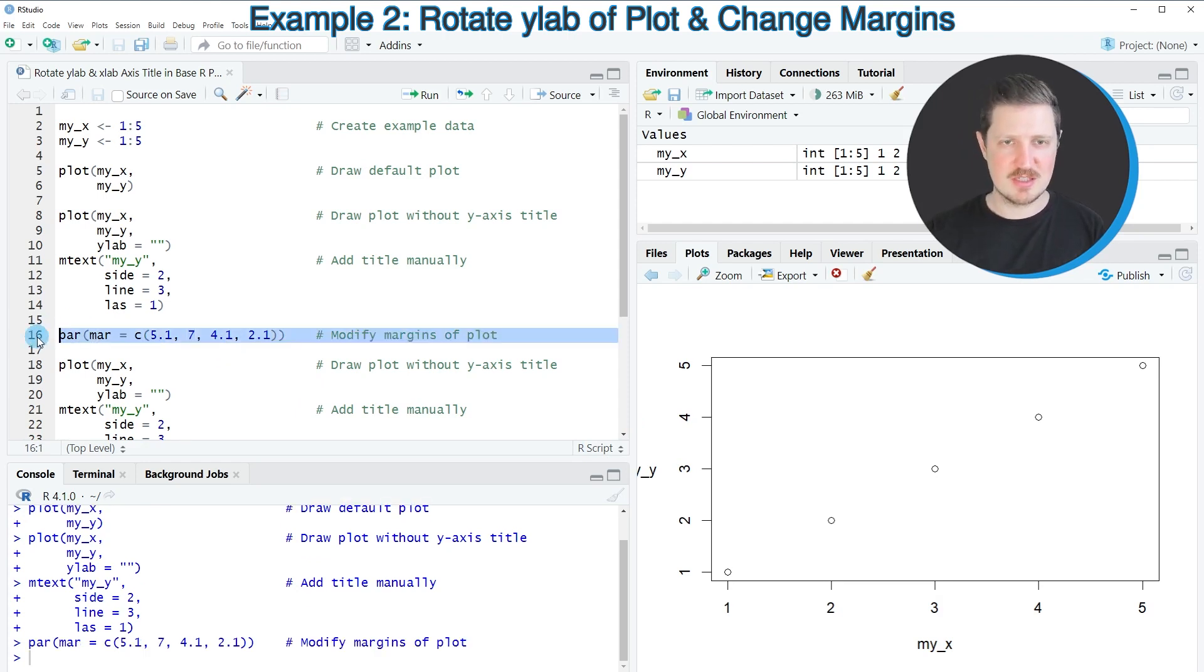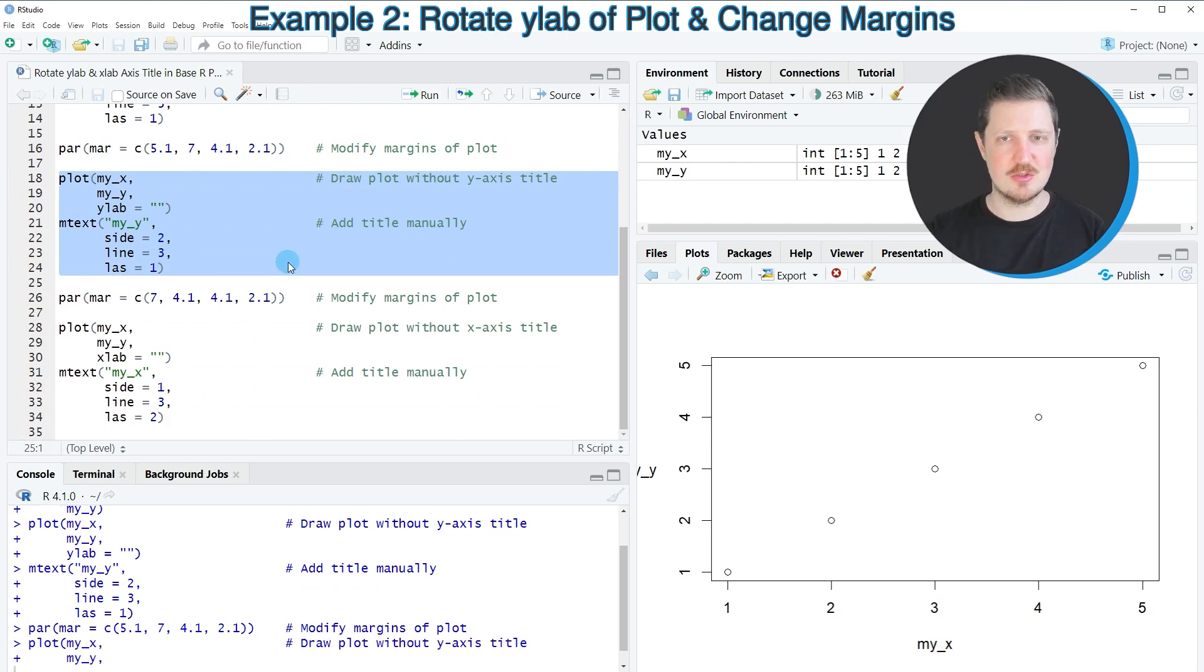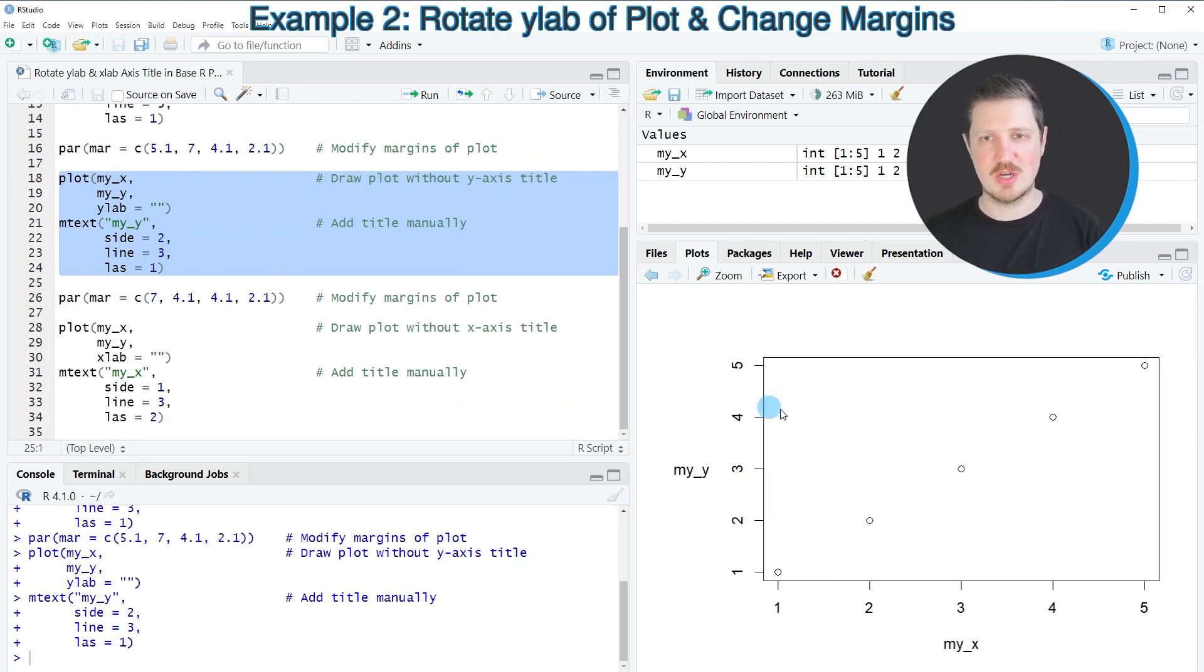After running line 16, our options are updated. By drawing our plot again in lines 18 to 24, the plot is moved slightly to the right and the entire horizontally aligned axis title MyY is shown.